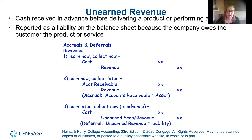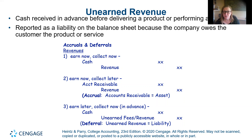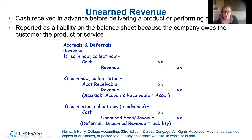There are three ways we could report revenues. First, we could provide the service or product and the customer pays right now — that's earn it now, collect it now. You debit cash and credit the revenue account. Then the second one we've been talking about since day one: we earn it now but don't collect it yet — earn now, collect later. That's when we record it with a debit to accounts receivable and a credit to the revenue account.